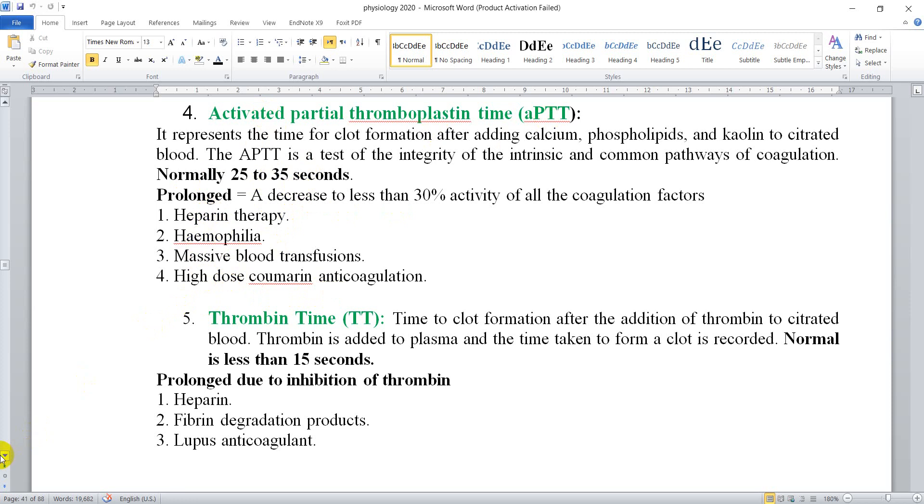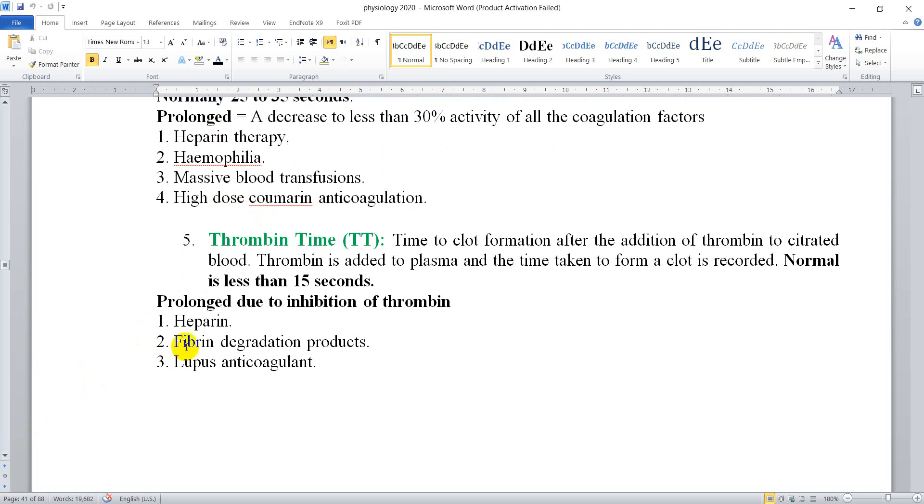The final test is Thrombin Time, or TT. This is the time to clot formation after addition of thrombin to citrated blood. Thrombin is added to plasma and the time taken to form a clot is recorded. Normal is less than 15 seconds.